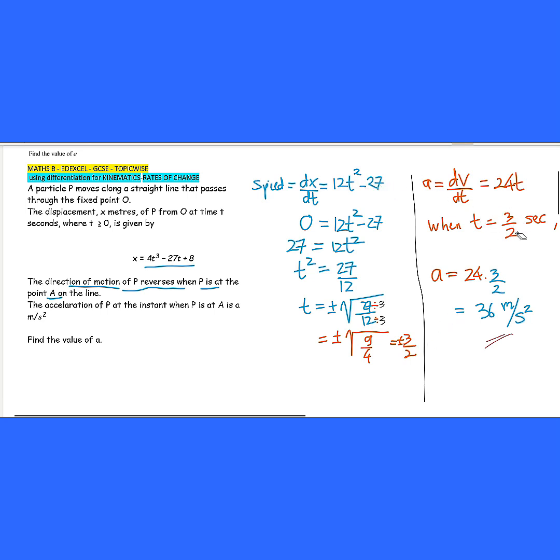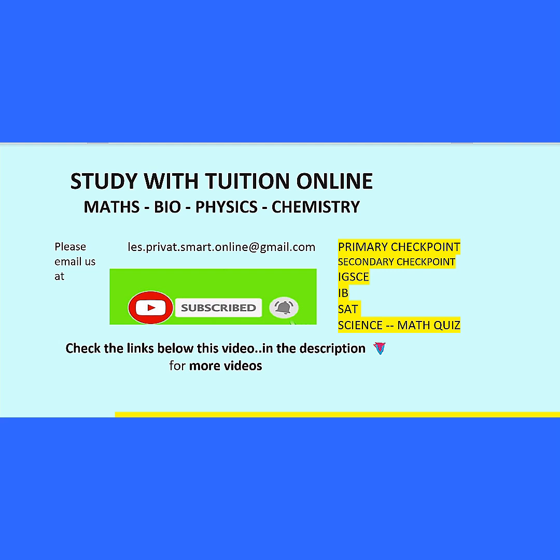So when t equals to 3 over 2 seconds, a is 24 times, so t is substituted by 3 over 2. We cancel this one, and then it becomes a 12, and then 12 times 3 will be equal to 36.